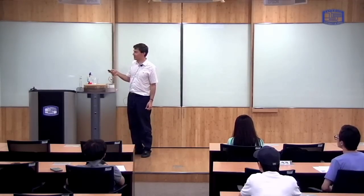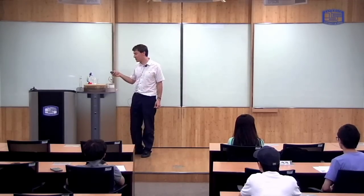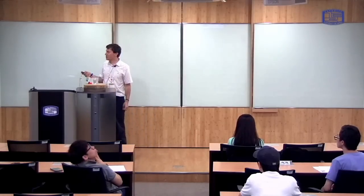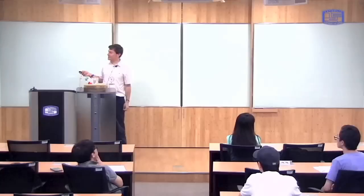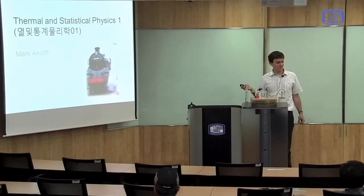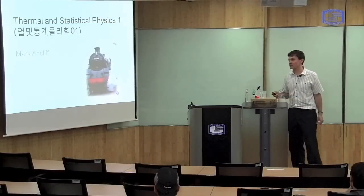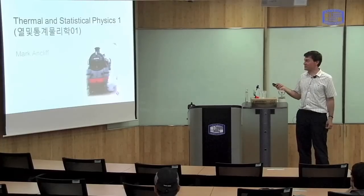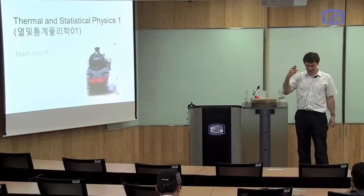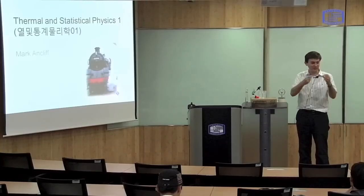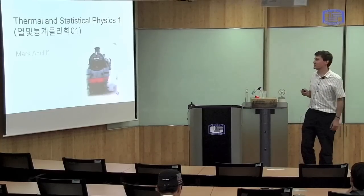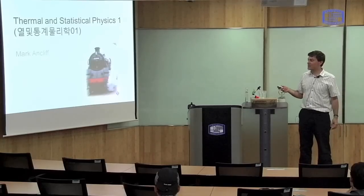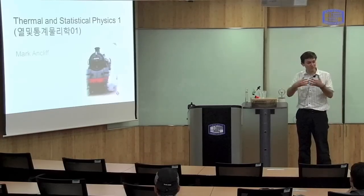There are two topics in this class. The first is Thermal Physics, and the second one is Statistical Physics. Thermal Physics is the study of heat and temperature — how does temperature affect a physical system? Statistical Physics is the study of the statistics of particles in a system — how do particles in a system behave? These are two separate topics, but as we will see in this class, they're very closely related.